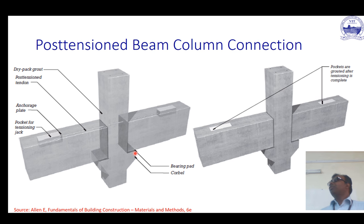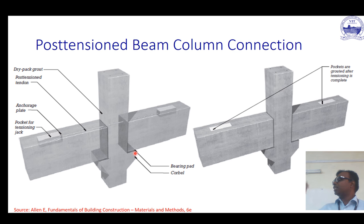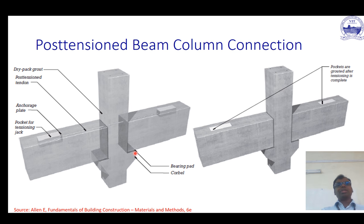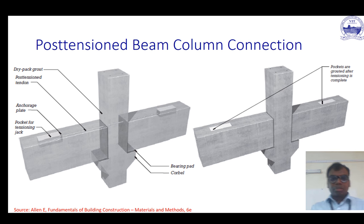You will always keep a bearing pad below the beam. For instance, in a railway track we have a neoprene pad — it absorbs all the impact given by the locomotive. That very thin neoprene pad takes up the enormous impact on the sleeper. Similarly, various materials can be used to reduce the impact of load from the beam to the corbel or column.